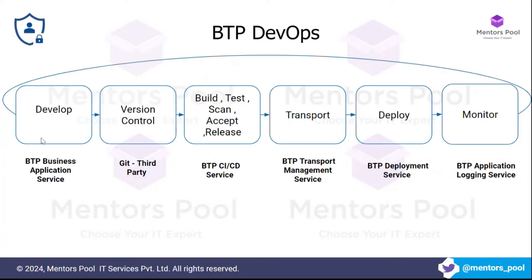The cycle starts from the develop phase, where developers build the application. There might be 10 or 15 developers working on it, so their versions need to be maintained properly and merged into one source of truth. Version control helps with this. Developers use Business Application Studio on BTP and connect it to a third-party version control tool like Git, Azure Repos, AWS CodeCommit, GitLab, or Bitbucket.